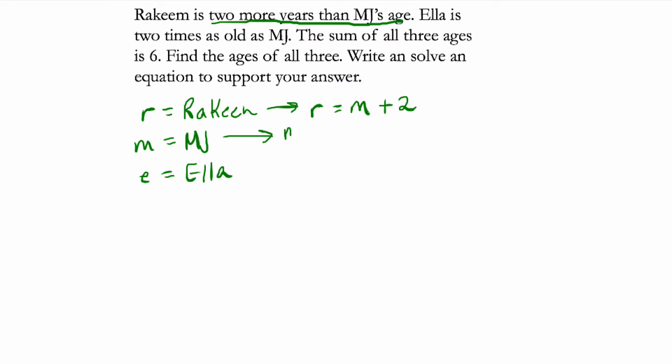Here I'm not going to say much other than MJ is his own age. And finally, Ella is two times as old as MJ. So twice or two times MJ's age. What this does already, it relates Rakim, MJ, and Ella all by the same variables.